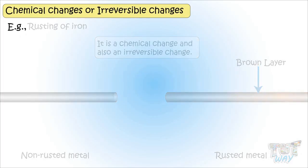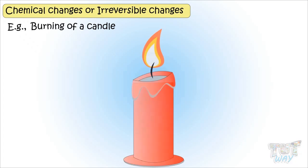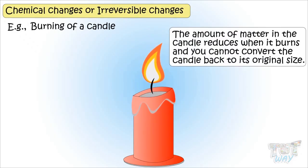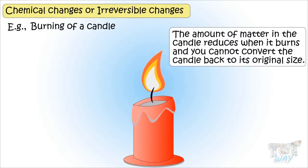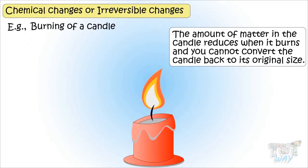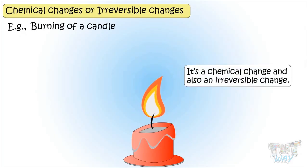Here is another example: a candle. When you light a candle, the size of the candle reduces with time, so the amount of matter is getting reduced. And you cannot convert back the candle to its original size, so it's a chemical change and also an irreversible change.